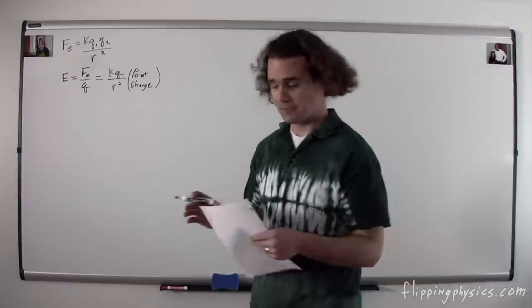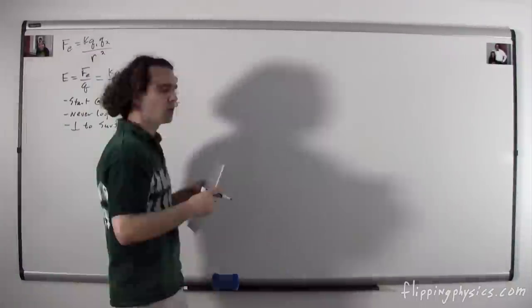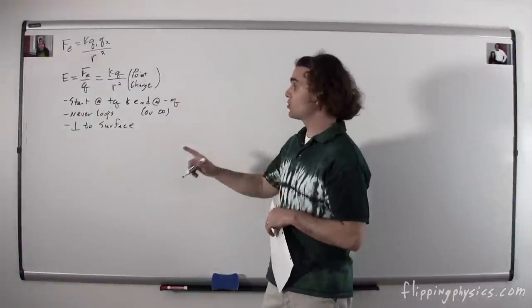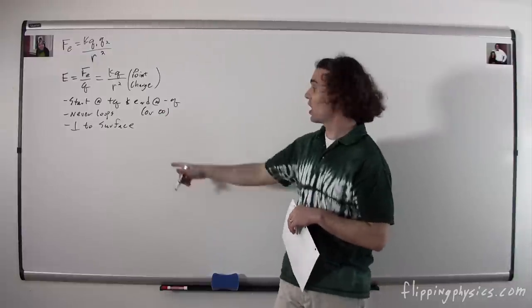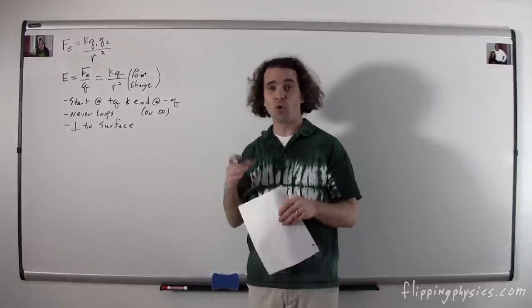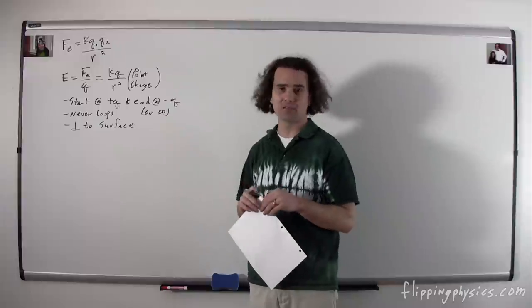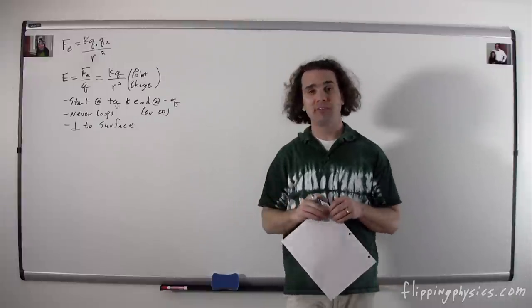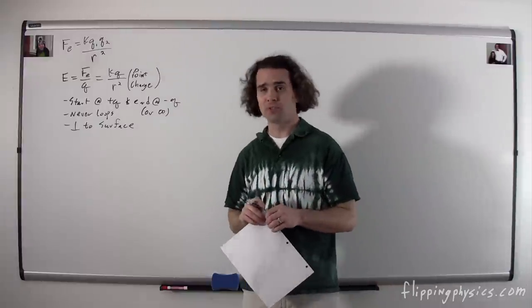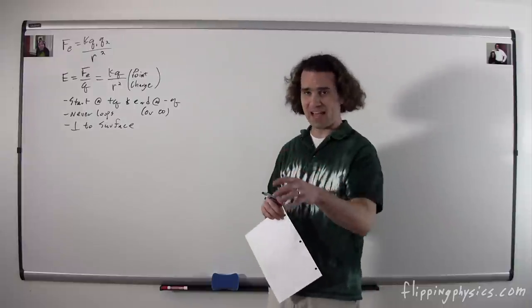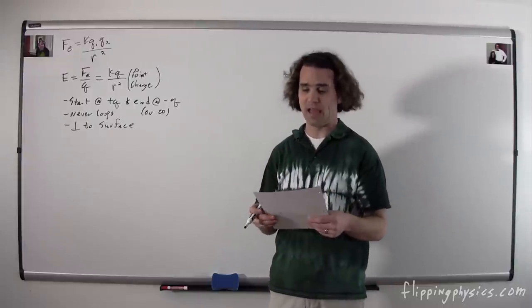Some notes about electric field lines: electric field lines always start at a positive charge and end at a negative charge, unless there are more positive or negative charges than the other, so they can either start or end at infinity. Electric field lines are never loops, and they are always normal to the surface — right next to the surface, they are always perpendicular or normal to that surface.